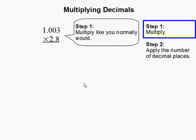Step 1: Multiply like you normally would. Let's multiply these two decimals, but we're going to ignore the decimal for now. So 28 times 1003 gets us 28084.